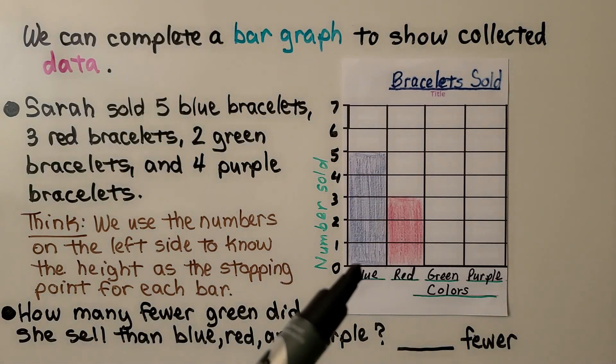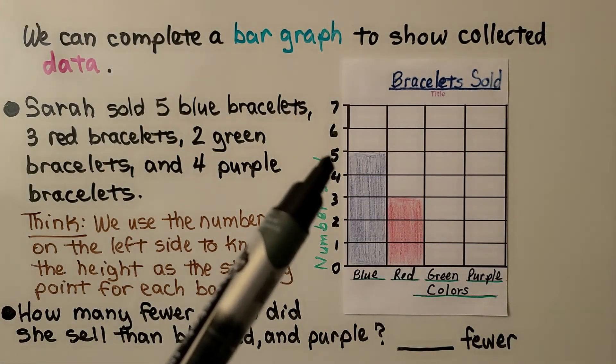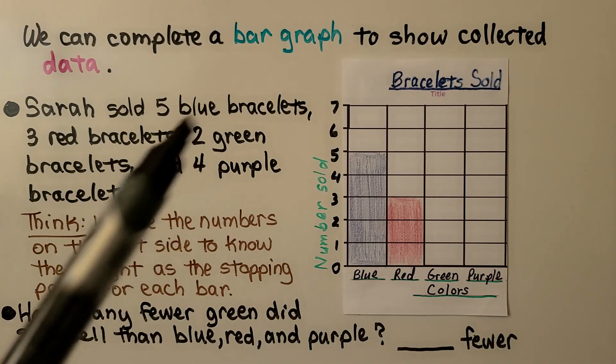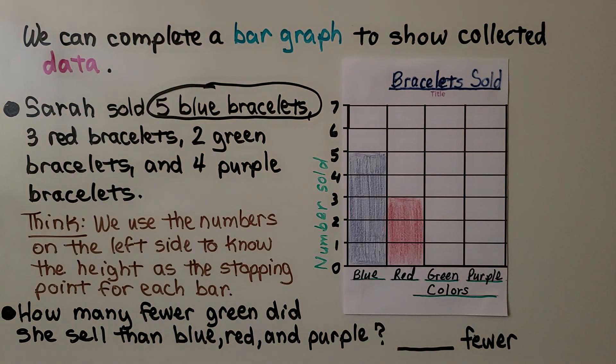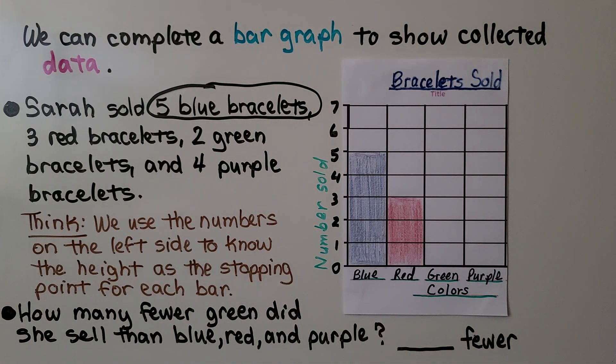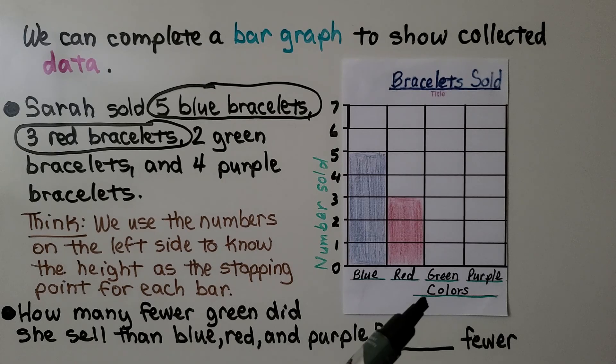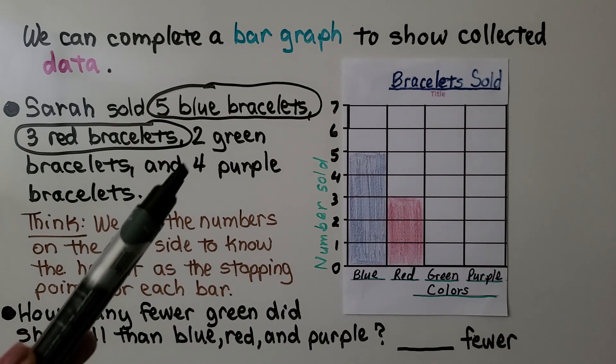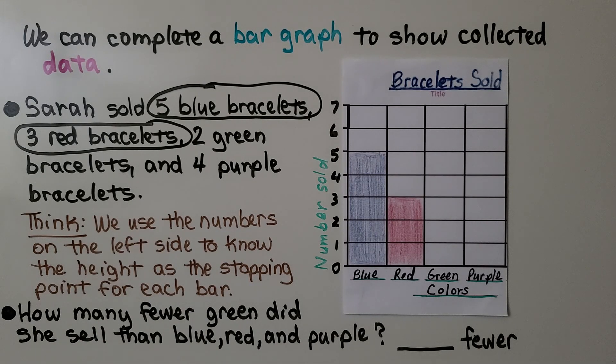We can see for blue, it's already here, the five blue. We can see for red, it's at three. So it already has the three red bracelets drawn. That tells us to complete this bar graph, we need to draw the two green bracelets and four purple bracelets.